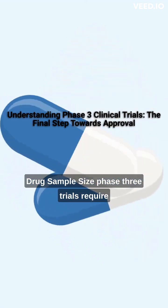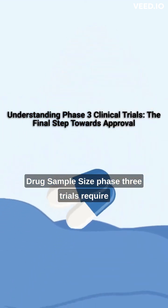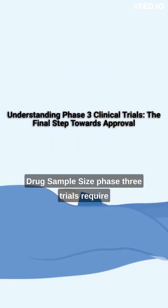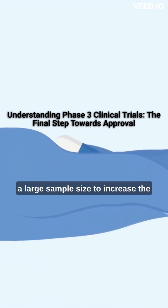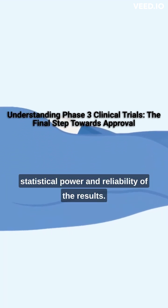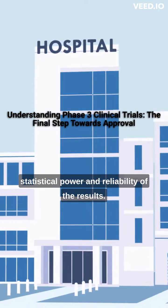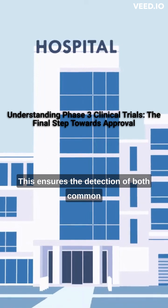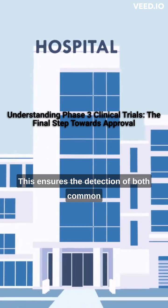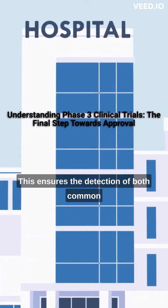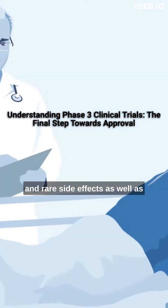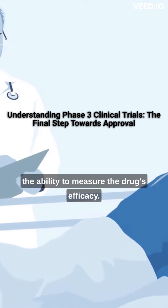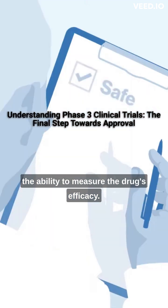Sample size: Phase 3 trials require a large sample size to increase the statistical power and reliability of the results. This ensures the detection of both common and rare side effects, as well as the ability to measure the drug's efficacy.